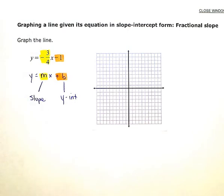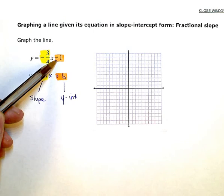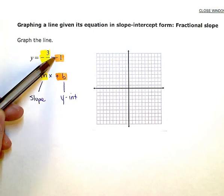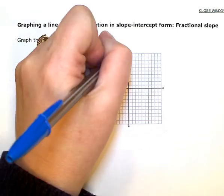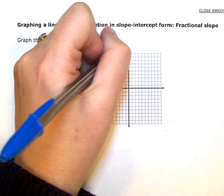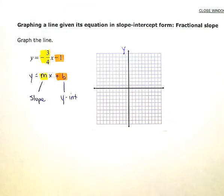So to graph my line, first I'm going to plot a point at my y-intercept, which is negative 1. So this axis, the up and down one, is my y-axis. This one is x.